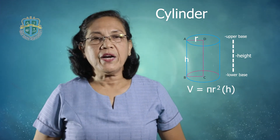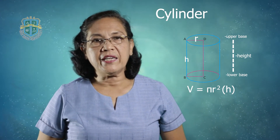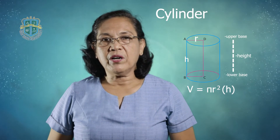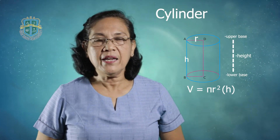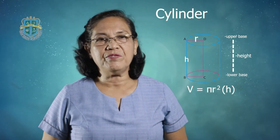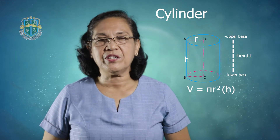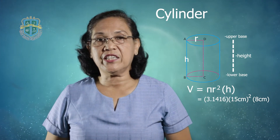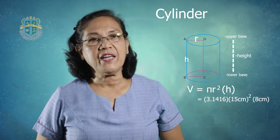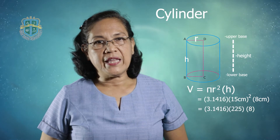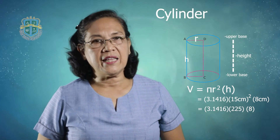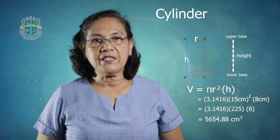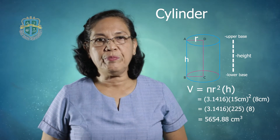Suppose we are asked to get the volume of a cylinder with a diameter of 30 centimeters and a height of 8 centimeters. Because the formula is pi r squared h, substitute the value of radius, which is half of the diameter. The radius becomes 15 because the given diameter is 30. When you square 15, you get 225. Then multiply this by pi and the height, which is 8 centimeters. So the volume of the cylinder is 5,654.88 cubic centimeters.